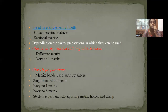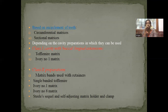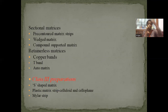Based on how much the tooth is encircled: circumferential means all of the tooth is covered, sectional means only a part of the tooth will be enclosed. Depending on cavity preparation: for class 1 with buccal or lingual extension, we use a Toffelmeyer matrix or ivory number 1. For class 2, we use matrix band with retainers like Toffelmeyer, ivory number 1, ivory number 8, self-adjusting, sectional matrices, compound-supported ones, and retainerless systems — copper band, auto matrix, and T-band.